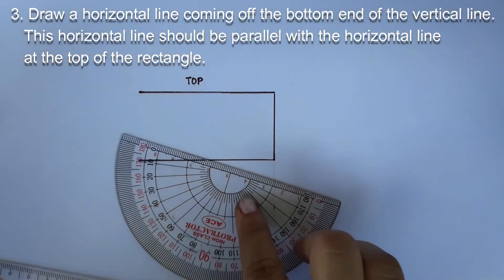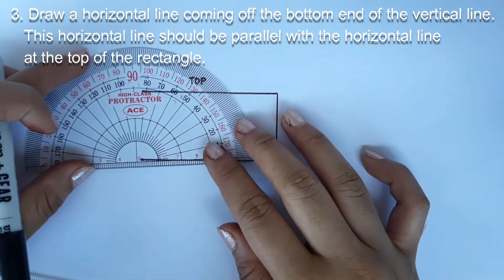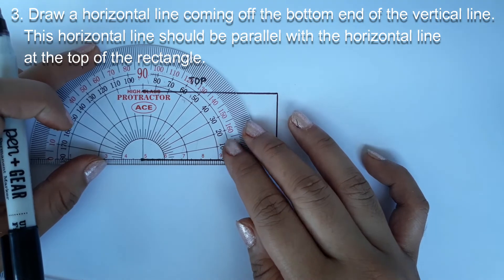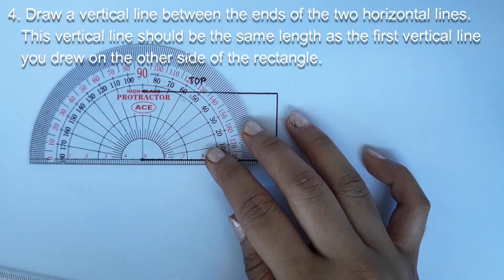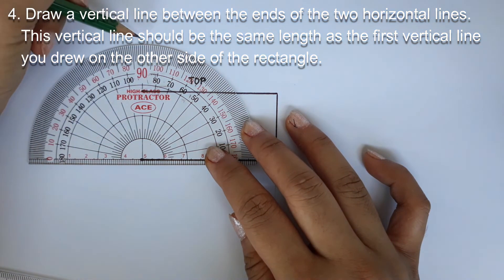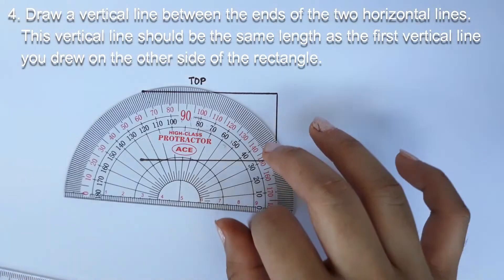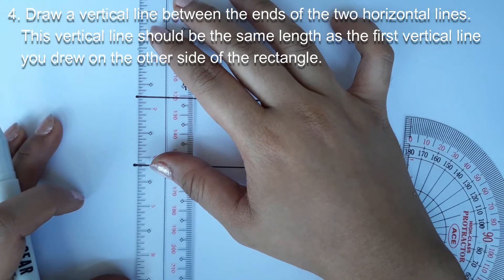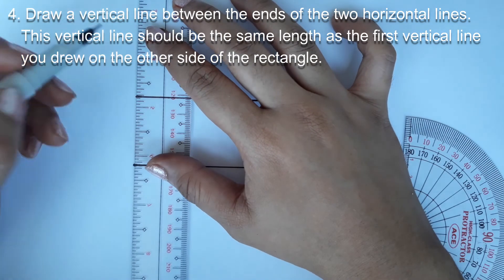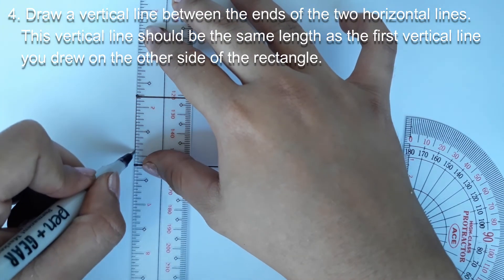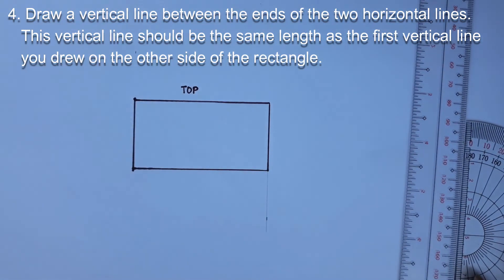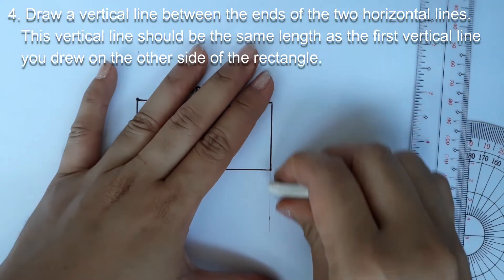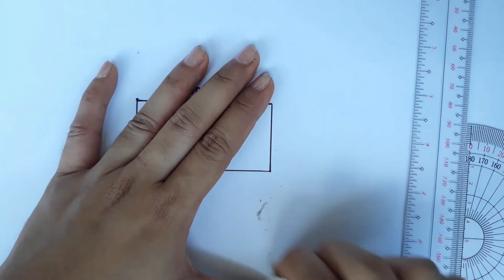This horizontal line should be parallel with the horizontal line at the top of the rectangle. Number 4. Draw a vertical line between the ends of the two horizontal lines. Use the ruler to make the line straight. This vertical line should be the same length as the first vertical line you drew on the other side of the rectangle. After you draw this line, your rectangle is finished.